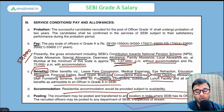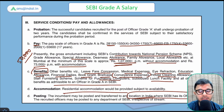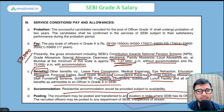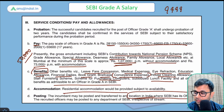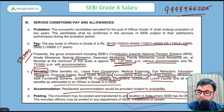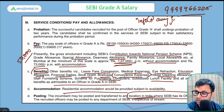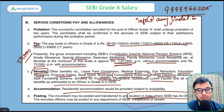That was everything about the SEBI Grade A examination. Past year cutoffs are very important — target 70 to 80 percent consistently in your preparation. If you have any doubts, put them in the comment section below, reach out to the team at 9999466225, or write a mail at info@anujjindal.in. All the best, take care, bye.